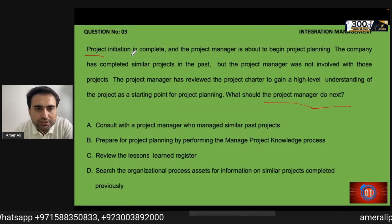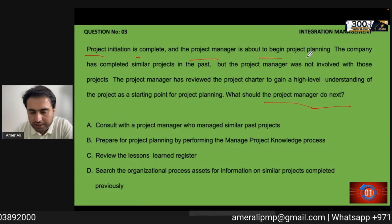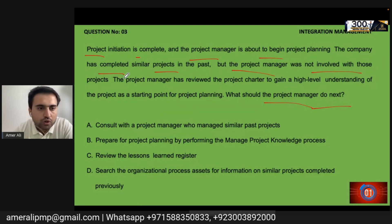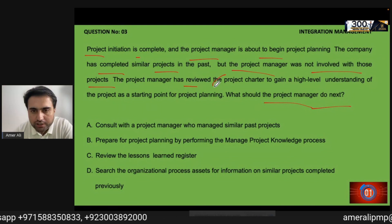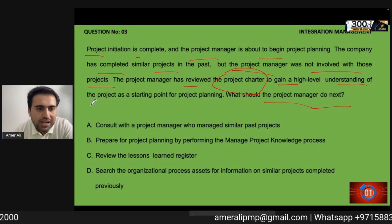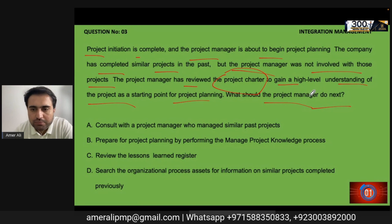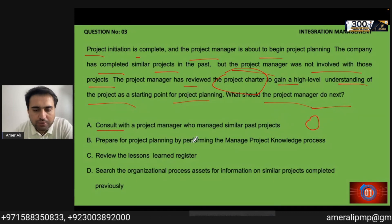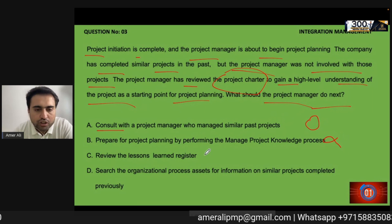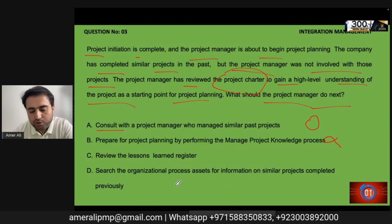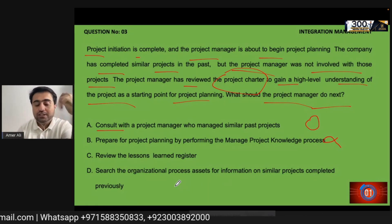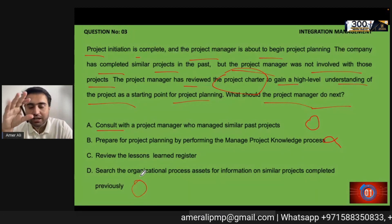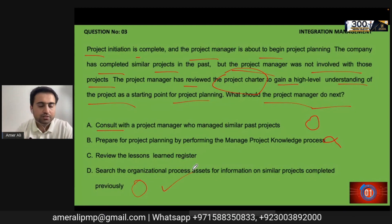Question: Project initiation is complete and the project manager is about to begin project planning. The company has completed similar projects in the past, but the project manager was not involved in those. The project manager has reviewed the project charter as a starting point. What should the project manager do next? The answer is to search the organizational process assets for similar projects. That is the straightforward and correct answer.